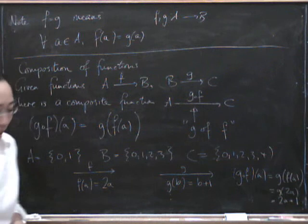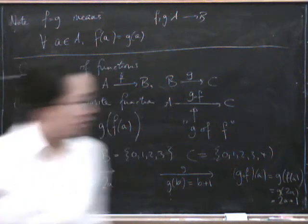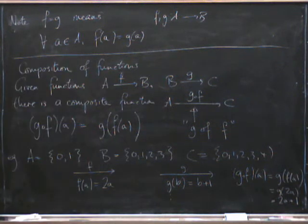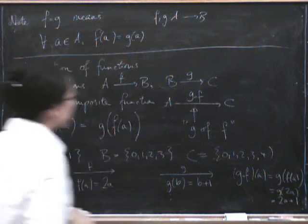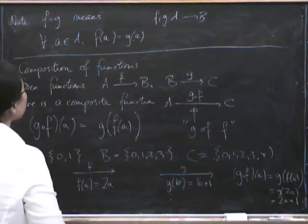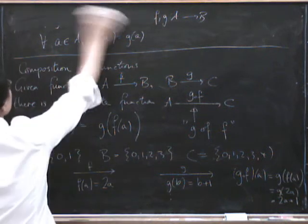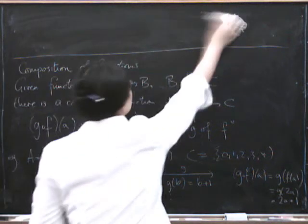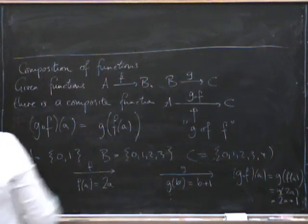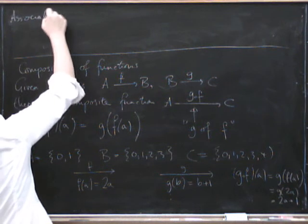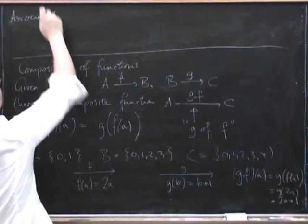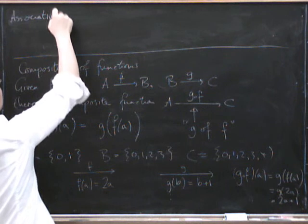So we can have lots of examples of how we compose functions and we can have a small theorem here about associativity saying that if we have 3 functions in a row. Associativity. Associativity.